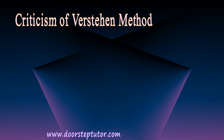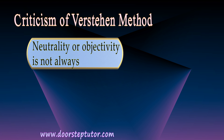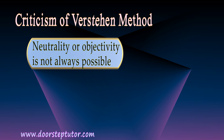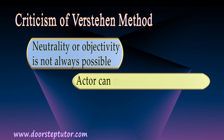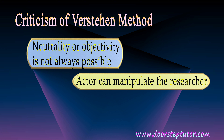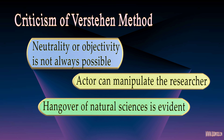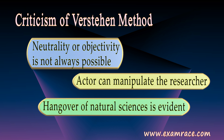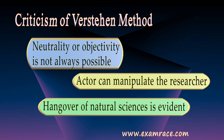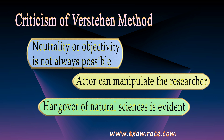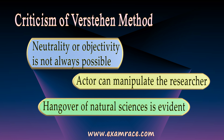Coming to the criticism of the Verstehen method: first, neutrality or objectivity is not always possible because we all have different natures and we are all humans who could get affected by emotions. Second, the actor can manipulate the researcher — if the actor is smart, he can easily manipulate the researcher. Third, the hangover of natural sciences is evident. When Max Weber talks about Verstehen method, he talks about objectivity, neutrality, and conducting experiments — these are also parts of natural sciences only, and when we talk about humans, it is not possible to remain very objective. Therefore, there is still a hangover of natural sciences.